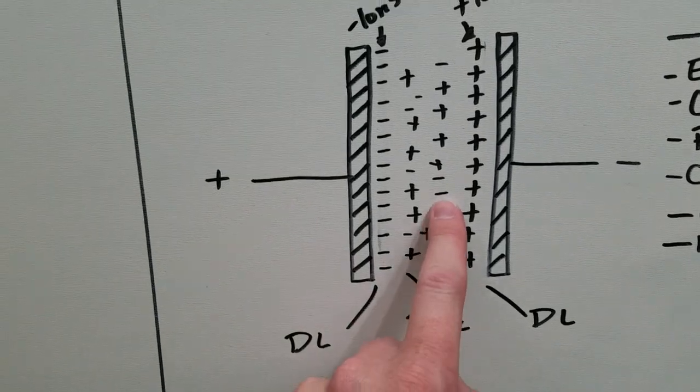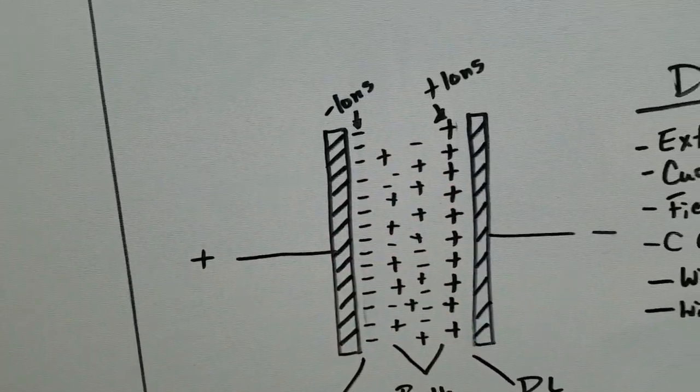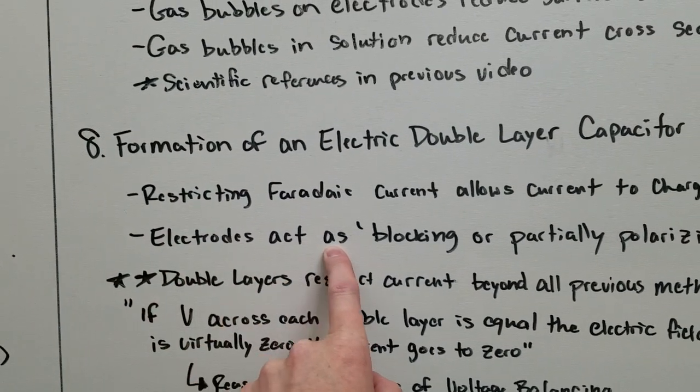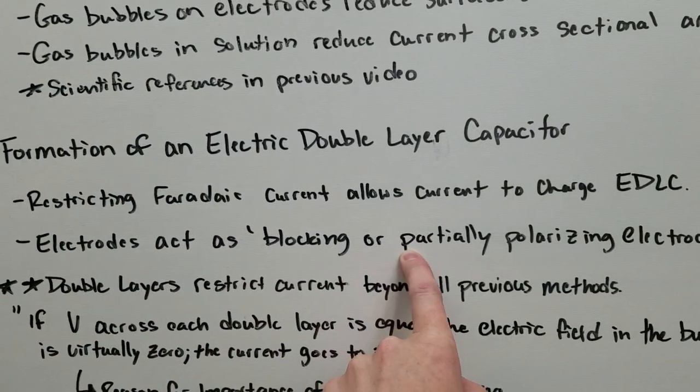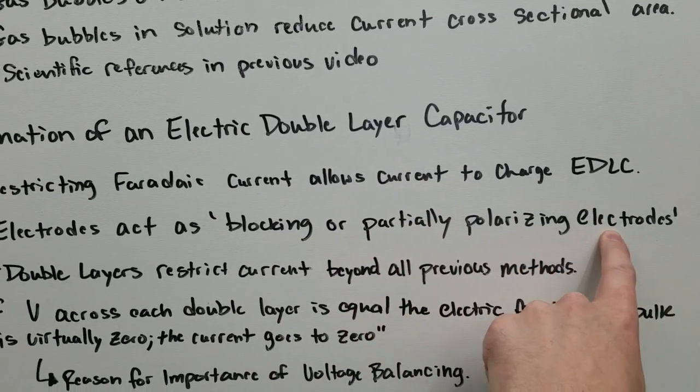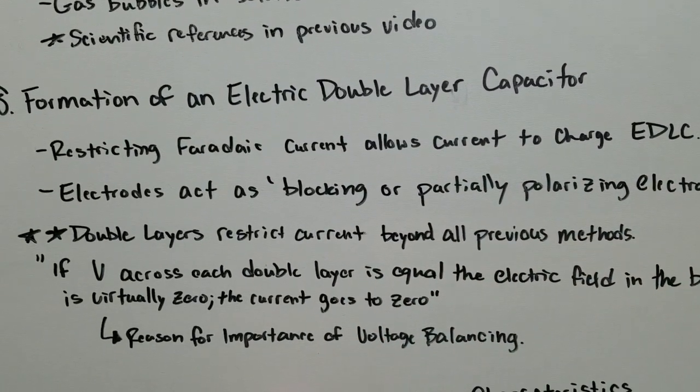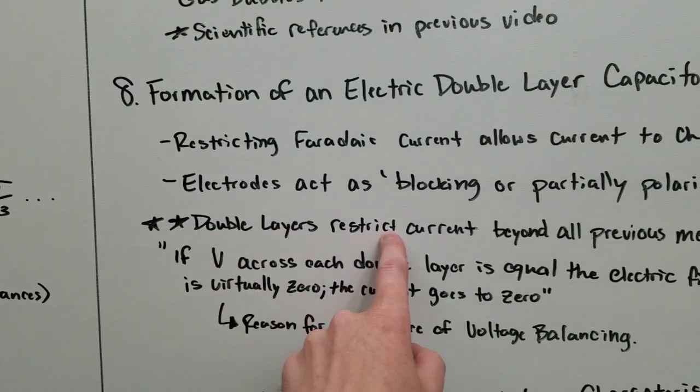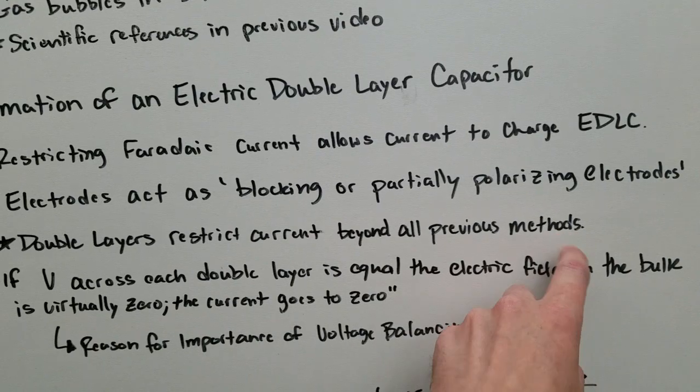In the bulk of the water, there's very little effect. And actually what happens, the electrodes act as blocking or partially polarizing electrodes. That's a term in electrochemistry. If you study electric double layer capacitors, you'll find these terms.